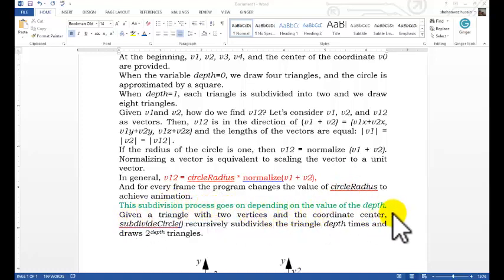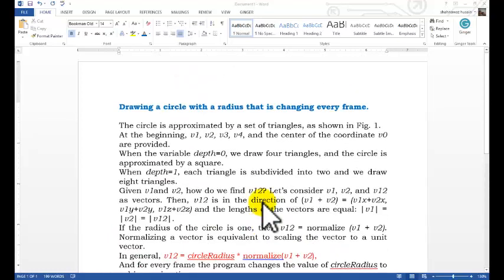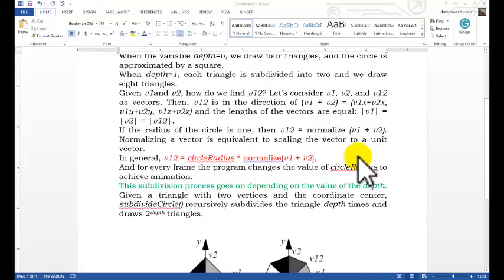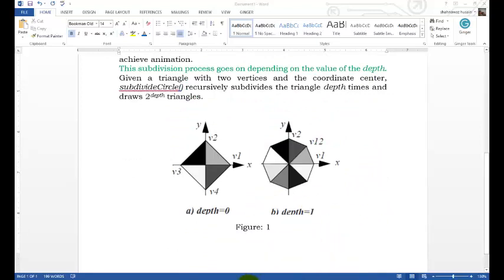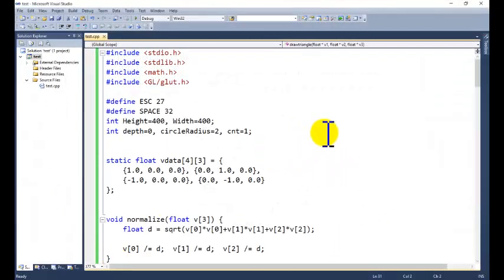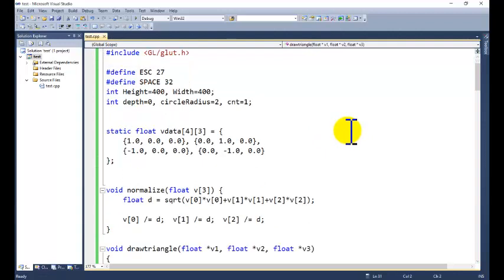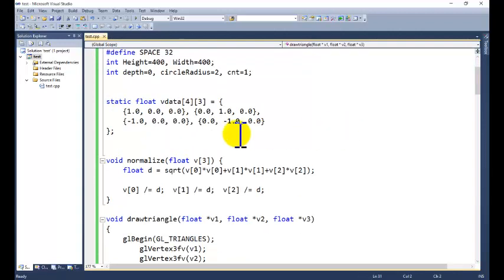This subdivision process goes on depending on the value of the depth. Given a triangle with two vertices in the coordinate center, subdivide circle. We are calling one subdivide circle recursively, subdivide the triangle depth times and draws two to the power depth triangles. This is about the description. Description you can download from the source code with the description. The source code is given. Source code directly. We are just starting from the visual studio. The environment variable is already set. This is the source code and source code you can download from the description link is given.